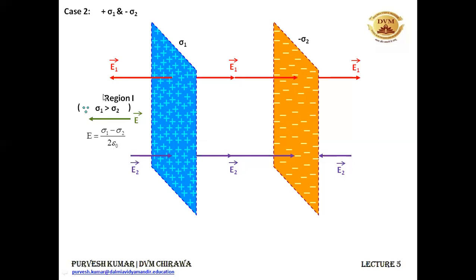The net electric field E comes out to be (sigma 1 minus sigma 2) upon 2 epsilon naught. In region 1 it is (sigma 1 minus sigma 2) upon 2 epsilon naught because it is E1 minus E2. E1 is sigma 1 upon 2 epsilon naught and E2 is sigma 2 upon 2 epsilon naught. Since they are acting in opposite directions we have done a subtraction.